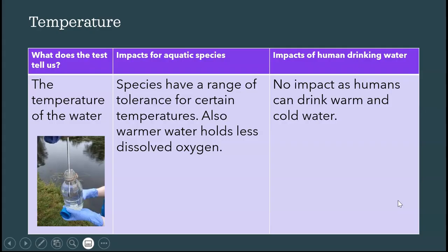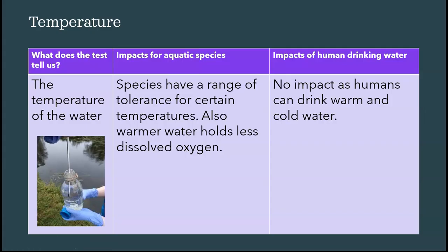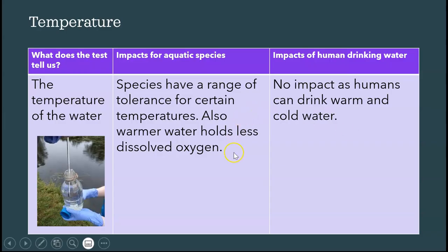The first test is temperature — obviously the temperature of the water. The impacts for aquatic species is that different species have a different range of tolerance for different temperatures. The other thing is about dissolved oxygen: warmer water holds less dissolved oxygen. There's no human impact for temperature on drinking water. We drink hot water, we drink cold water, so there's nothing significant for humans as far as temperature goes.